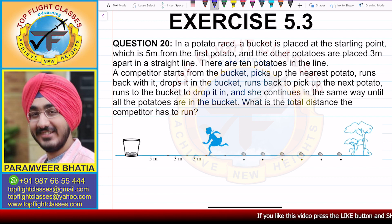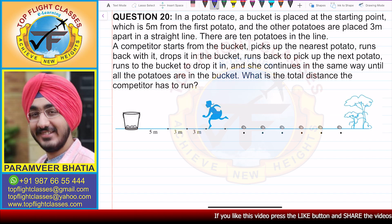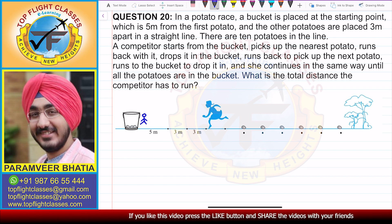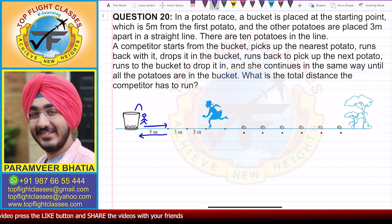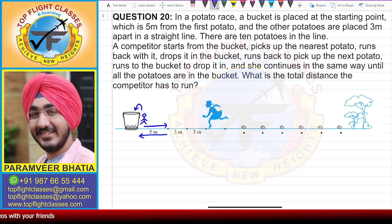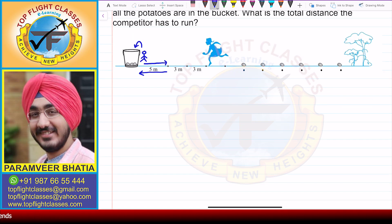What is the total distance the competitor has to run? The competitor starts from the bucket, goes to the first potato, picks it up, returns to the bucket, then goes to the second potato, and so on. The first potato is 5 meters away from the bucket.